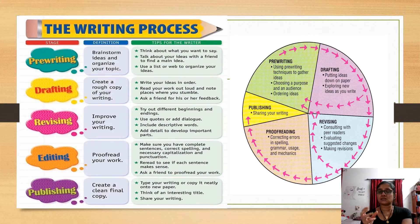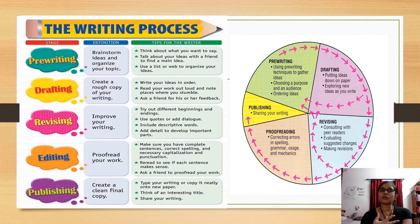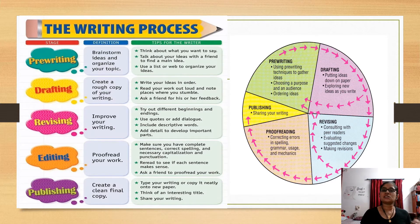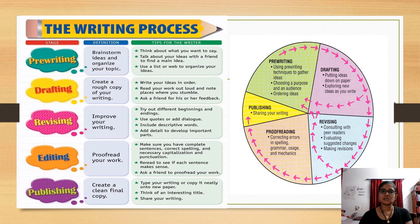Try out different beginnings and endings, use quotes, or add dialogue. For example, if you are writing a motivating essay or speech, you can add quotes; if you are writing a story, you need to add dialogues. Adding dialogue or a quote gives richness to the piece of writing. Also, add detail to develop important parts — whenever you write anything, whether a story, opinion writing, or descriptive writing, support your passage with lots of examples. That way, when someone reads your writing, they understand it very clearly.